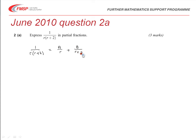And if we combine those two fractions back together, we know that our common denominator is going to be r(r+2). And so you've got to multiply the A by r plus 2 and the B by r.